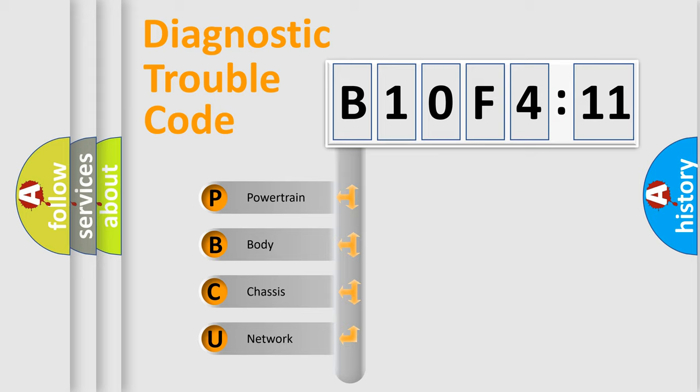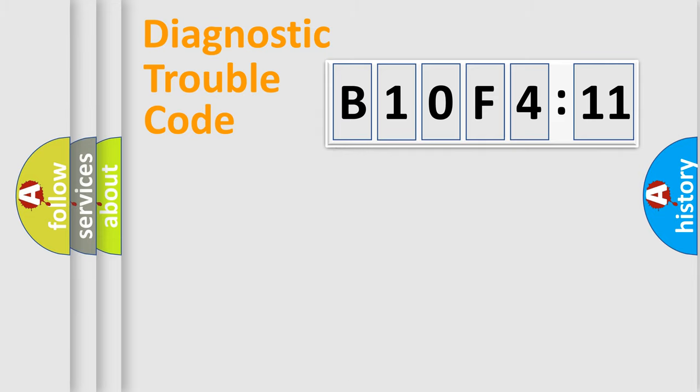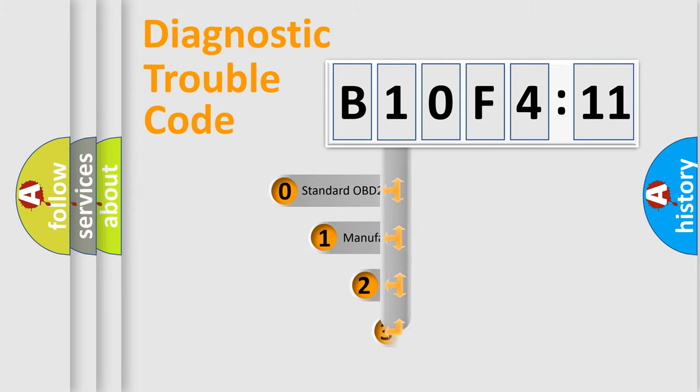We divide the electric system of automobile into four basic units: Powertrain, body, chassis, and network. This distribution is defined in the first character code.